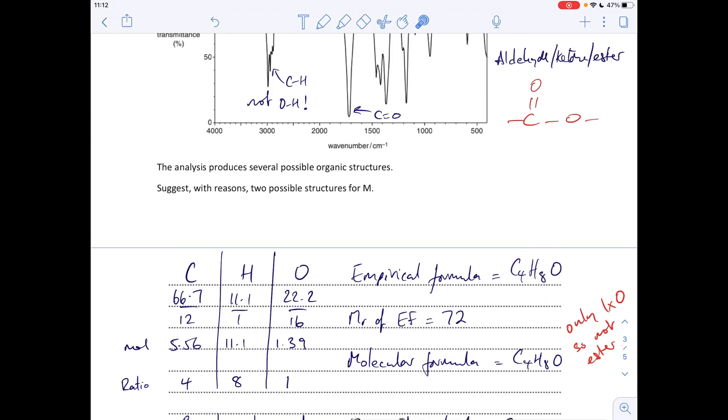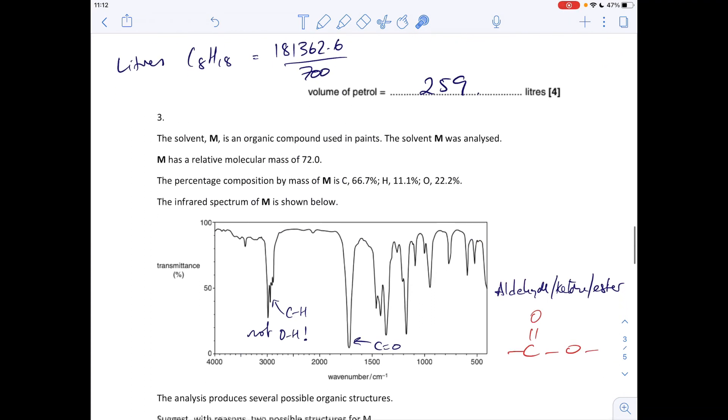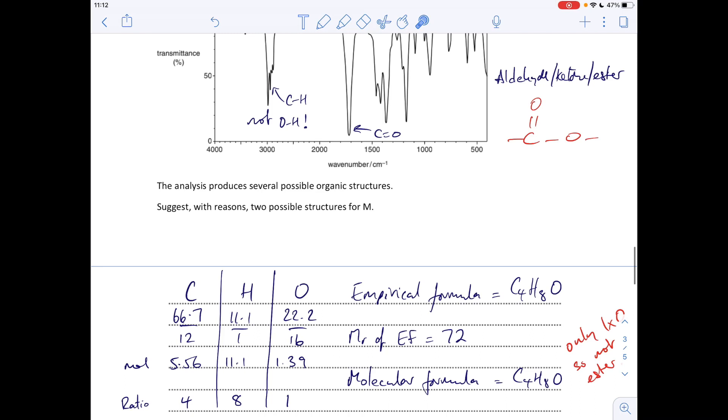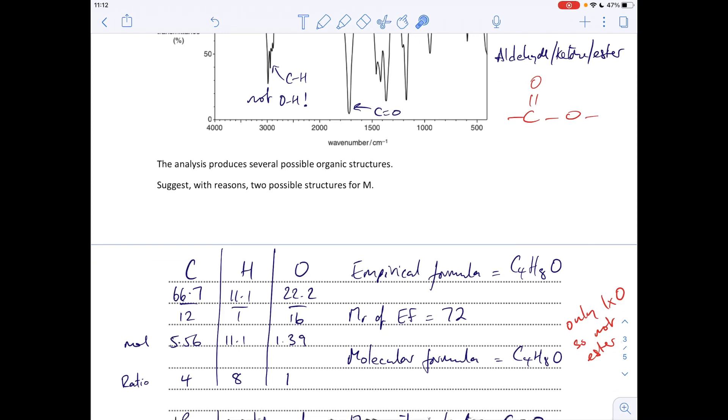We're then going to work out the MR of that which is 72, and remember we were told at the top of the question the molecular mass is 72. So we're not going to multiply out here, it's got the same molecular formula C4H8O. And then you can see in red there I've said it's only got one O so it's not an ester. So my thought that it was an ester at this point, we can rule that out now, so it's going to be an aldehyde or a ketone.